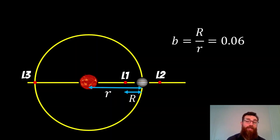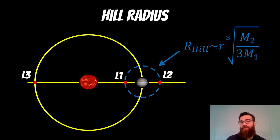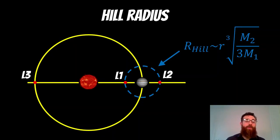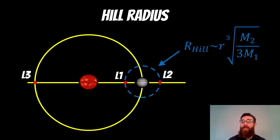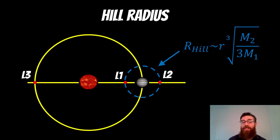L2 would be basically the same, just on the opposite side. Interestingly, this location lies approximately where the Hill radius is — the sphere of influence of the secondary object, where its gravitational influence ends and the larger object begins to dominate. It makes sense that L1 and L2 sit at that boundary. Putting in the actual values for A and B in terms of distances and masses, you'll arrive at a similar figure as the Hill radius.